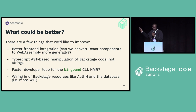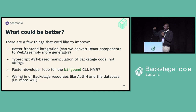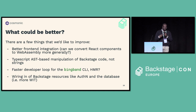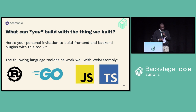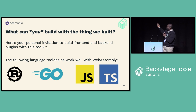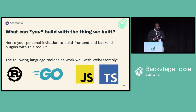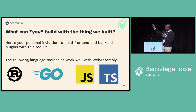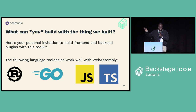And of course there's wiring of more Backstage resources like authentication and the database — that actually means writing more WIT, formalizing the interface and wiring things up to make that interface available at runtime to the WebAssembly binary. Generally, what can you build with this? We'd like people to build front-end and back-end plugins with this toolkit and help us find the sharp edges and things that don't work. As far as WebAssembly goes, Rust, Go, JavaScript, and TypeScript have the best bleeding-edge support for the features coming out — they're great places to start.